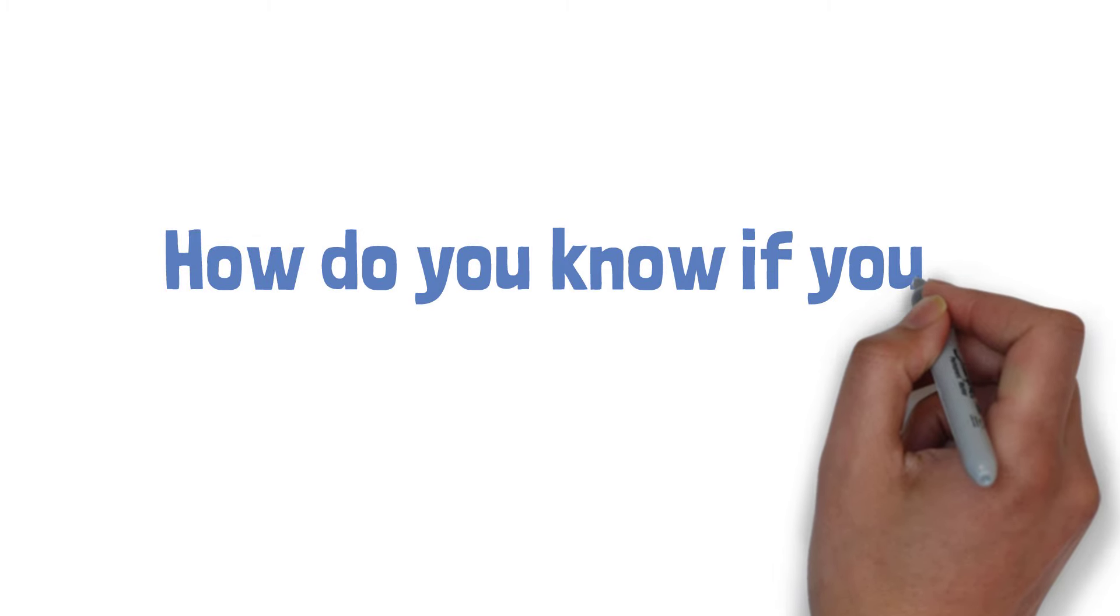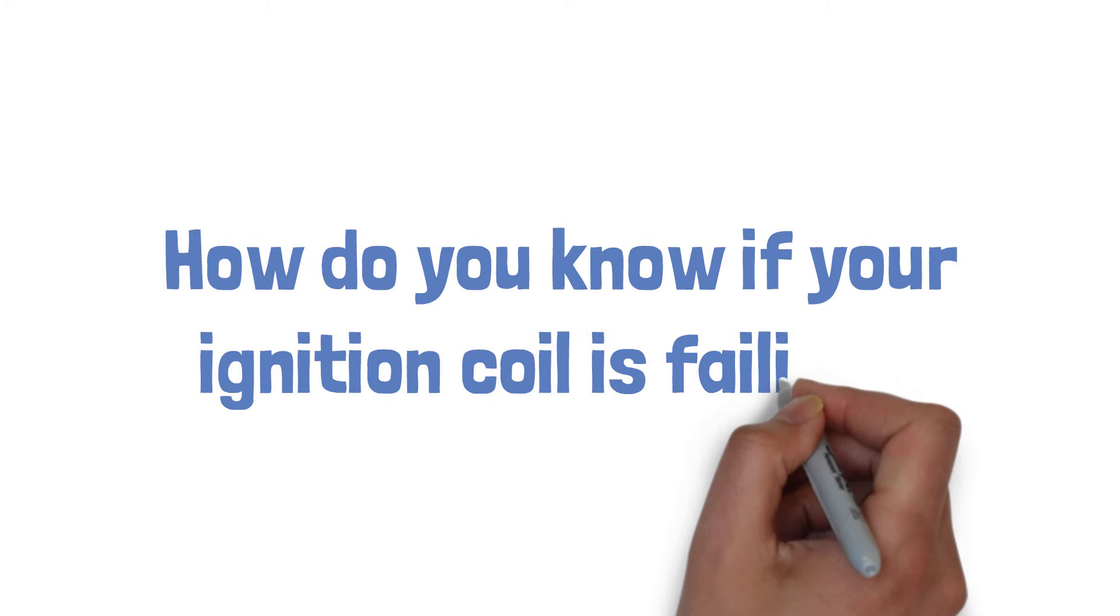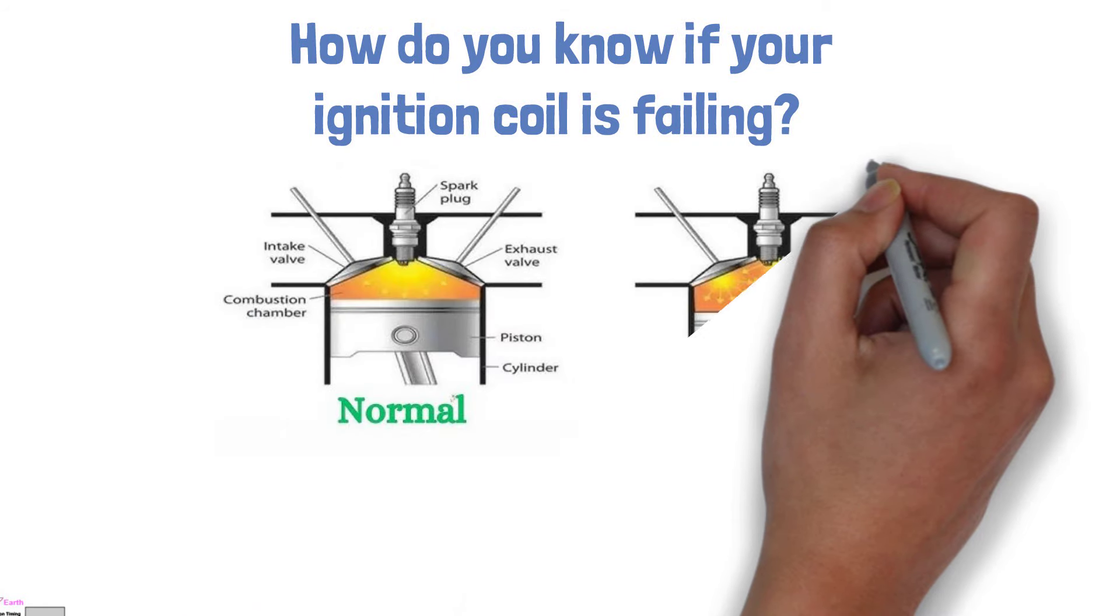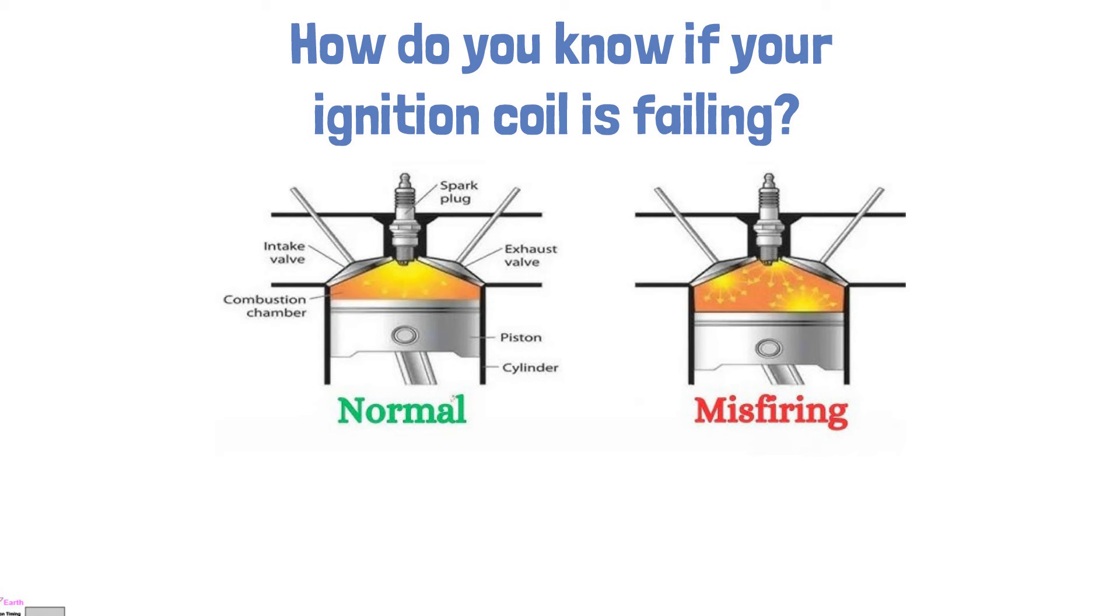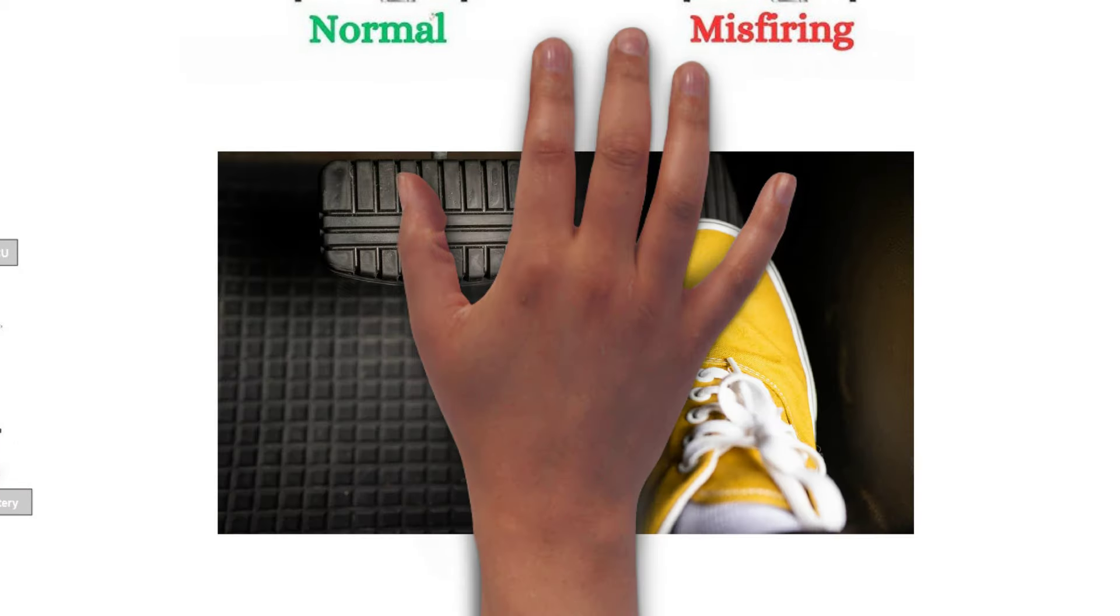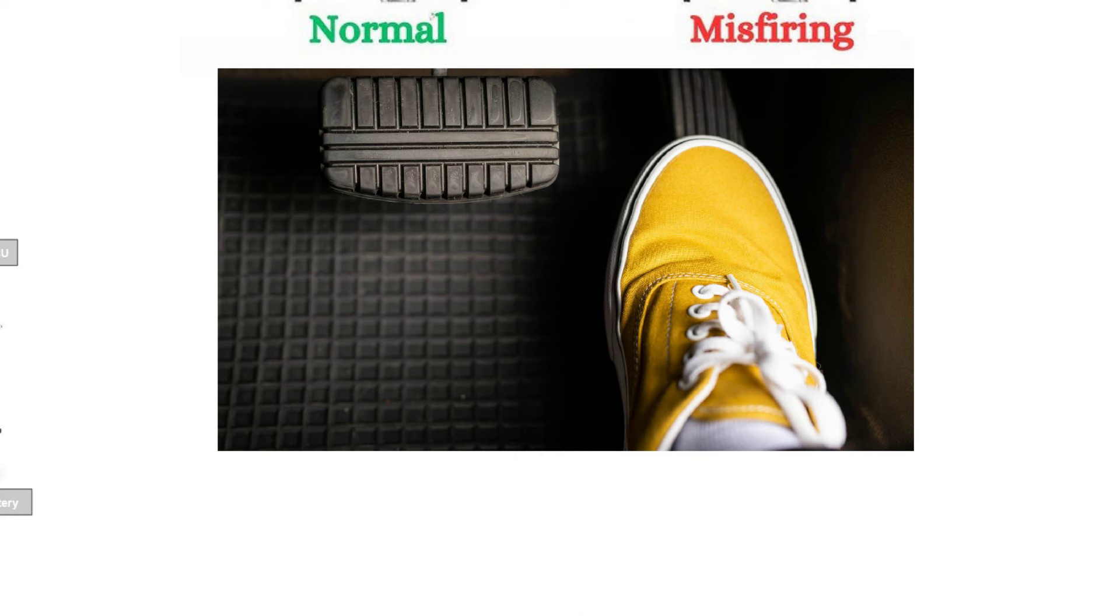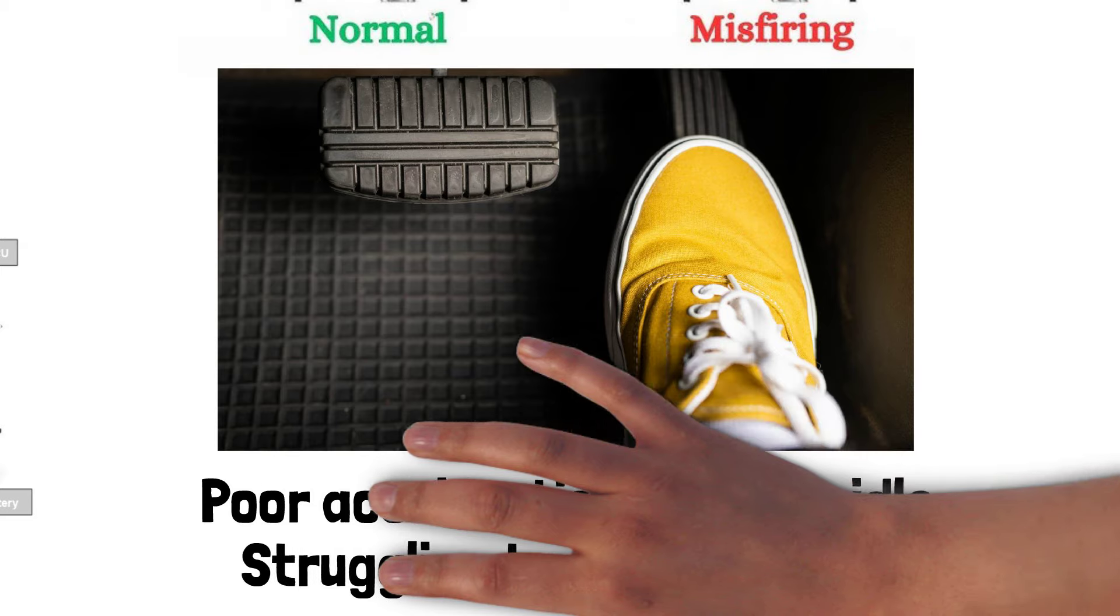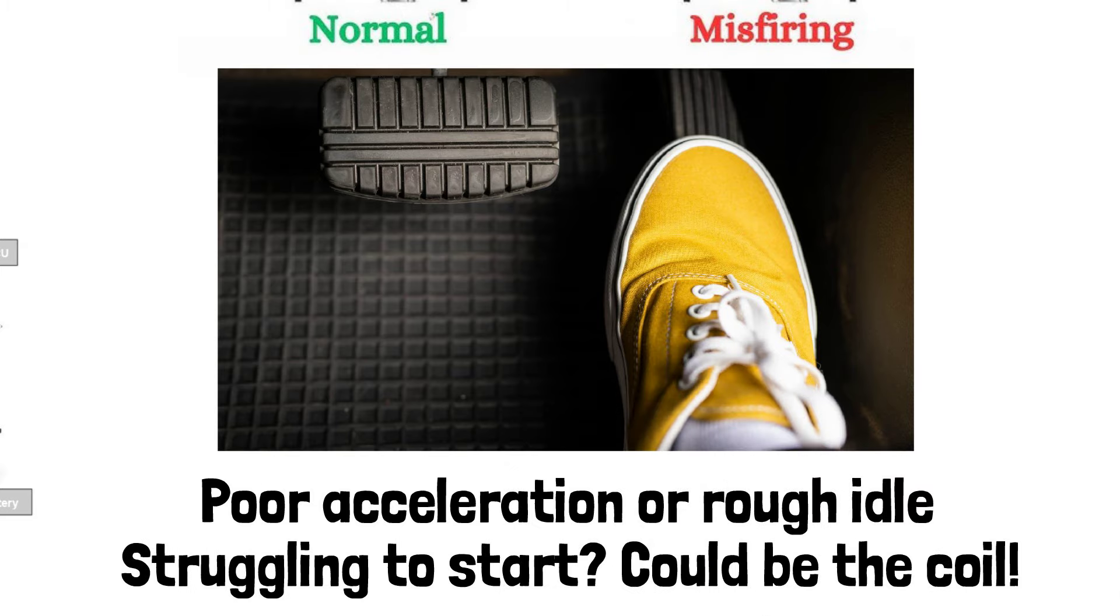How do you know if your ignition coil is on its way out? First, you'll notice engine misfires, hesitation, or even stalling. If your car's sputtering like a bad dancer at a wedding, it could be the coil. You might also experience poor acceleration or a rough idle. And if your engine's just plain struggling to start, you might be looking at a faulty coil.